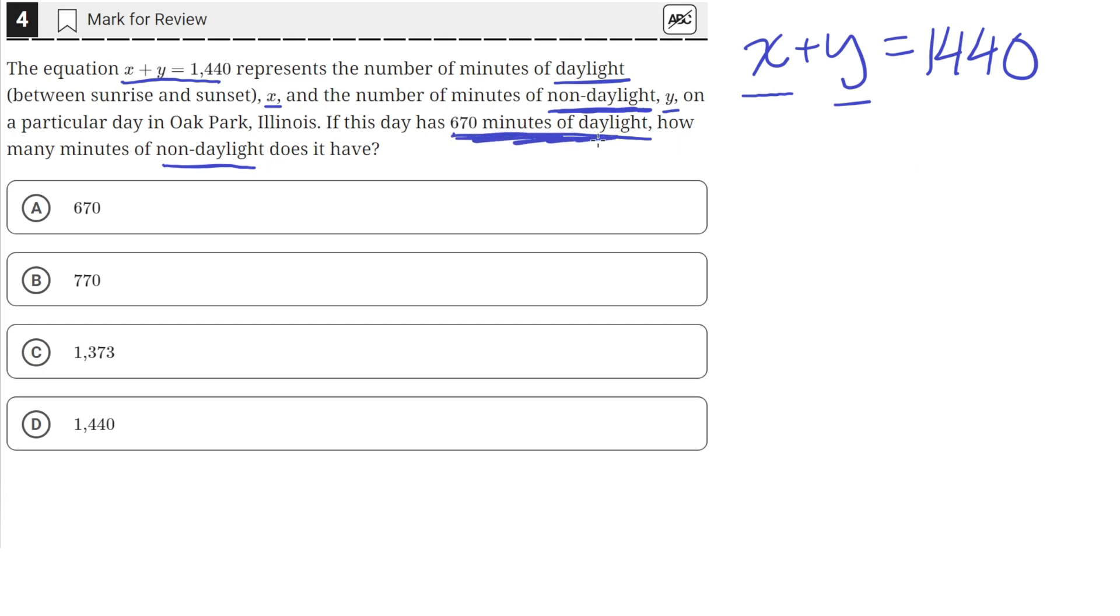So if there are 670 minutes of daylight, which means x equals 670, then to find the number of minutes of non-daylight, we just need to solve for y in the equation after we substitute 670 for x.